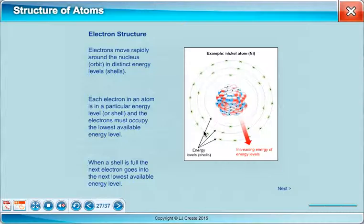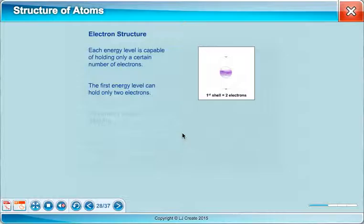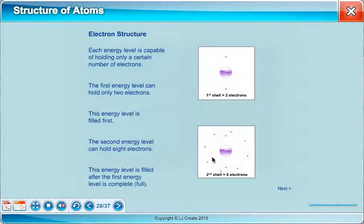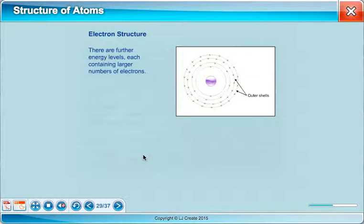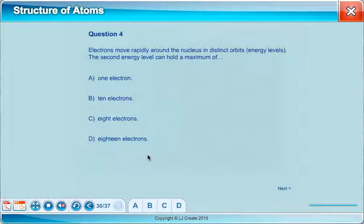This is the 2-8-18 concept that Mr. Negrete and Ms. Poole have been talking to you guys about. The first energy level can only hold two. If there's a third electron, it doesn't fit in that first shell, so it has to move up to the second shell. When those next eight fill up, it goes on to the next one. Here we go. Here's the 2-8-18 number that we've already repeated. There we go. Electrons moving rapidly around the nucleus in distinct orbits or energy levels. The second energy level can hold a maximum of 1, 10, 8, or 18. Pause for a second. The second energy level holds 8. Remember, 18 is the third energy level, and 1 and 10 are just wrong.